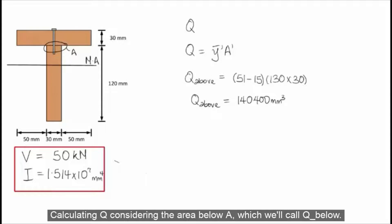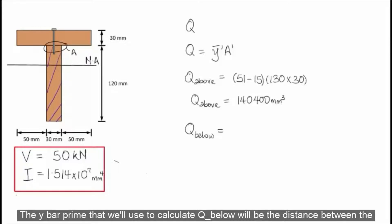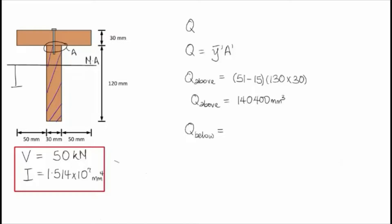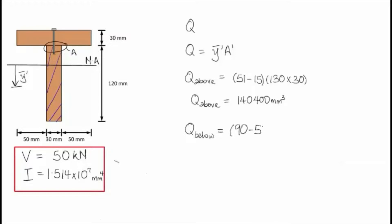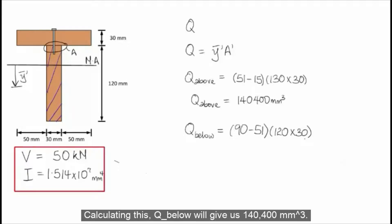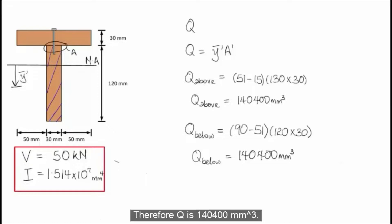Calculating Q considering the area below A: the Y-bar prime is the distance between the centroid of the section below A and the centroid of the entire cross-section, which is 90 minus 51, and A prime is the area of the section below A, which is 120 times 30. Calculating this, Q below gives us 140,400 millimeters cubed. Therefore, Q is 140,400 millimeters cubed.